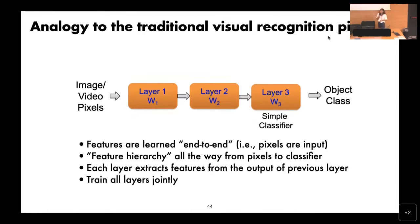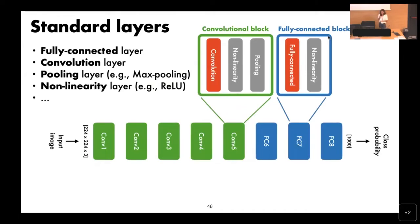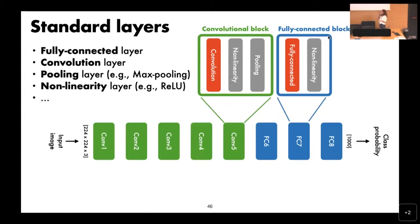What's inside the black box? Let's go through standard layers. I'm showing a typical 2012 AlexNet-like model consisting of eight blocks. There's no consensus on what a 'layer' means — it can mean every single function or a block (a series of functions). In this case, a convolutional block like CONV5 contains three layers: the convolutional layer, nonlinearity, and pooling successively. A fully connected block has a fully connected layer and a nonlinearity — you could also have a normalization layer.